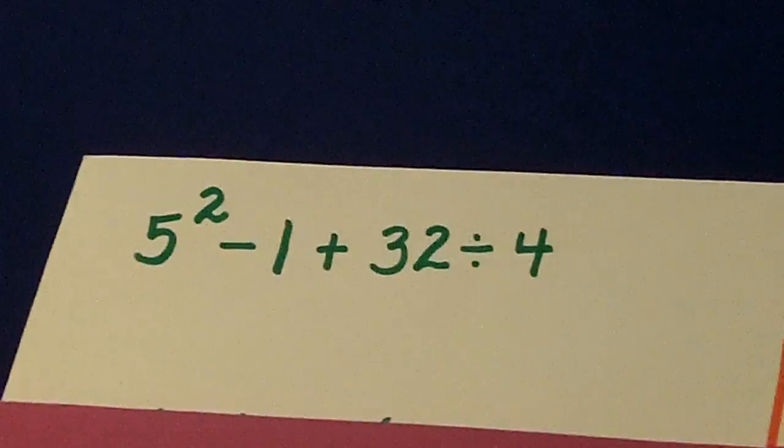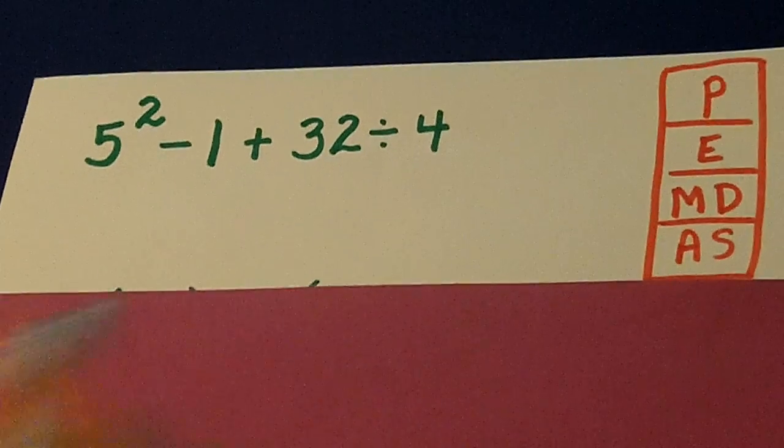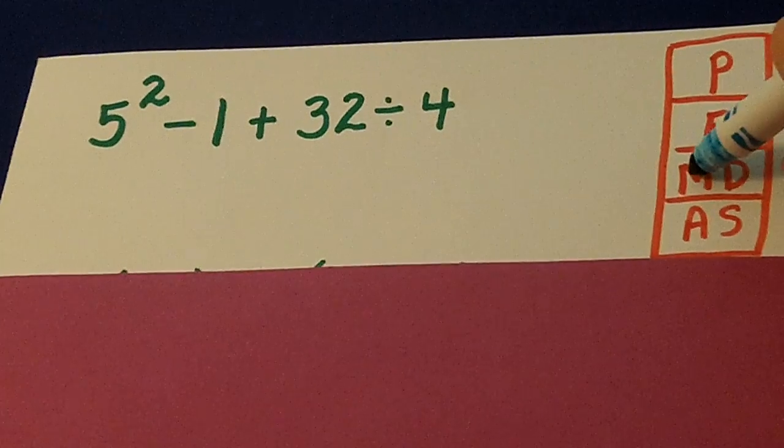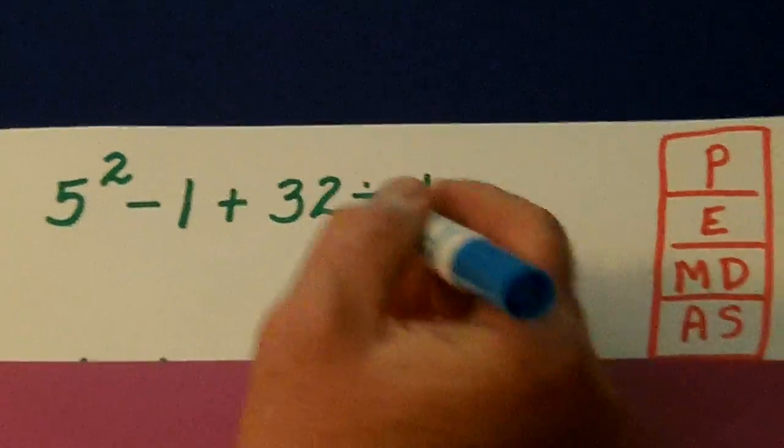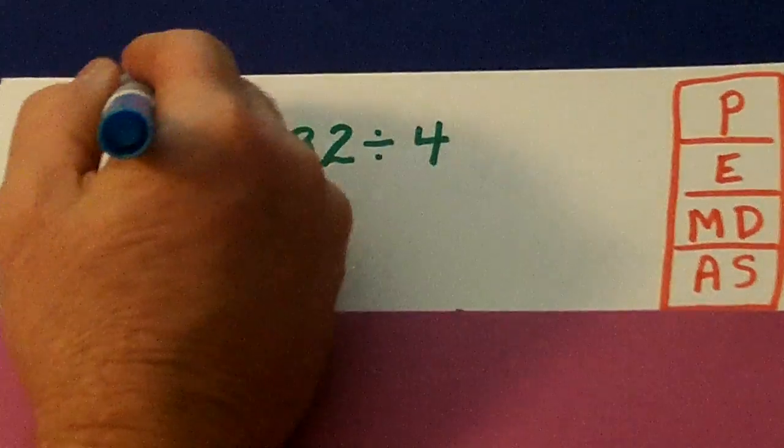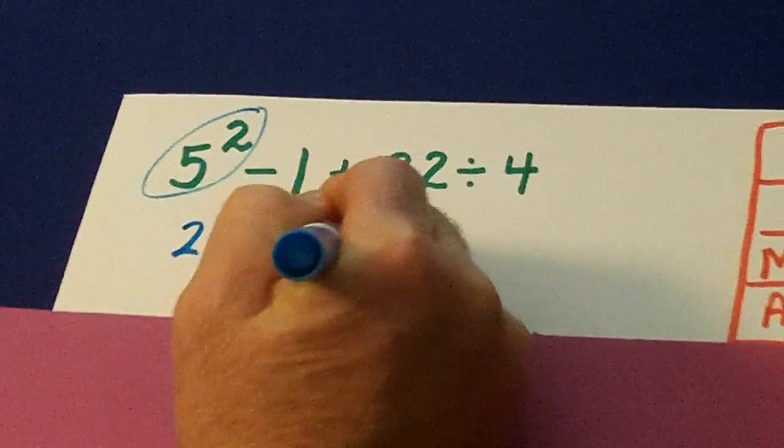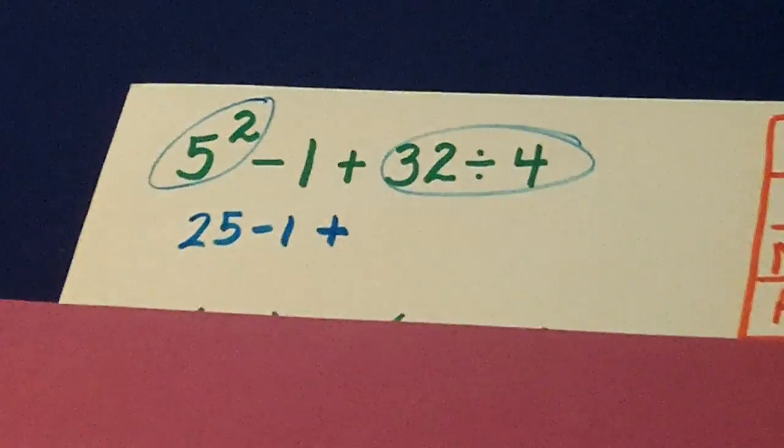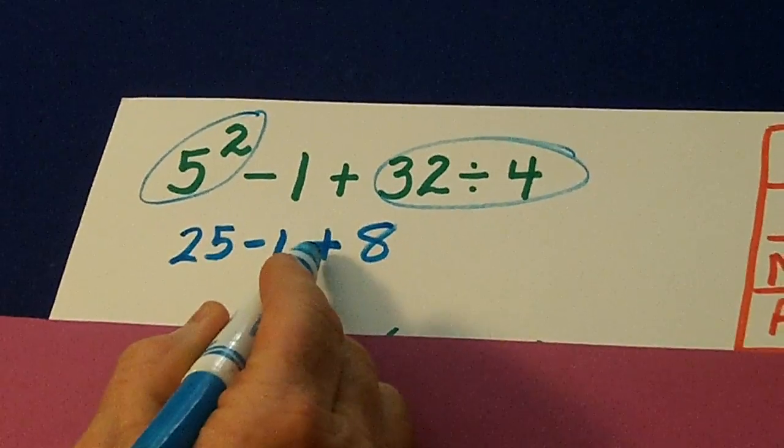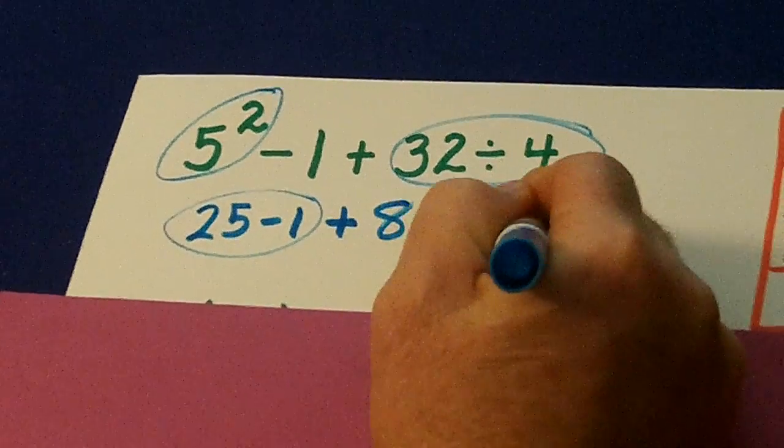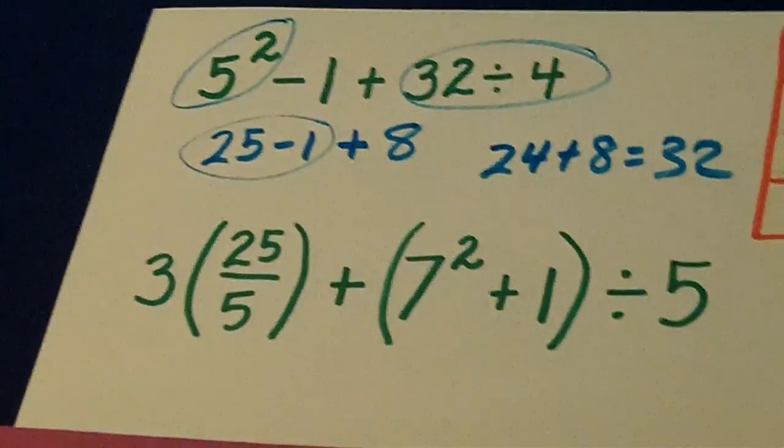Once again, we're going to keep in mind, in our PEMDAS system, parentheses first, then exponents, then multiplication and division, and then addition and subtraction. It's right over there as a helper. There's no parentheses, so we do this first. 25 minus 1 plus, let's go ahead and do that, plus 8. There's minus and plus, so we do the one that comes first. That's 24 plus 8 is 32.